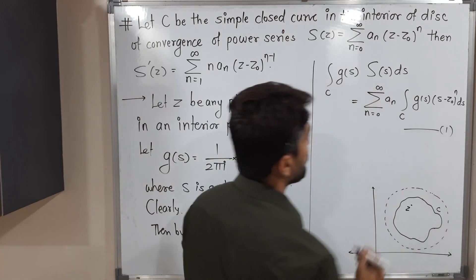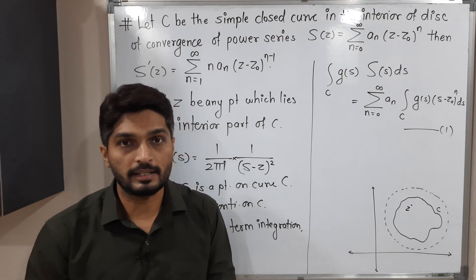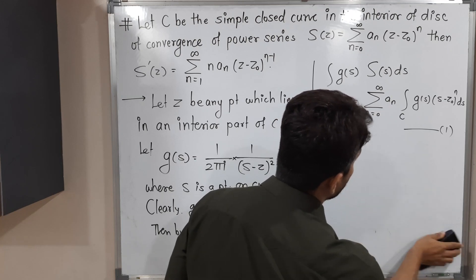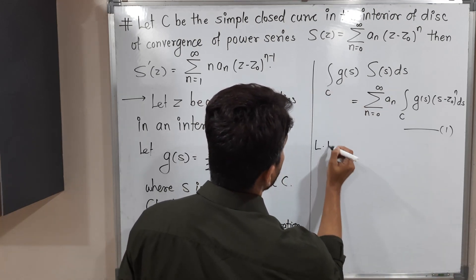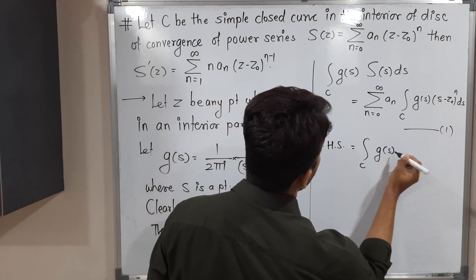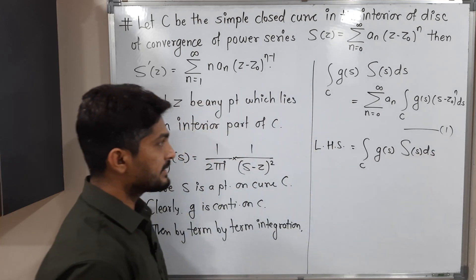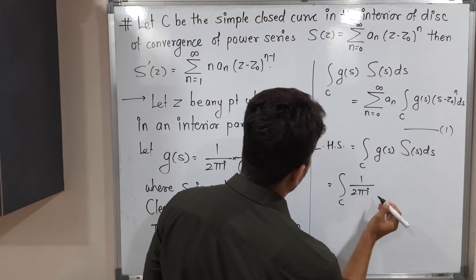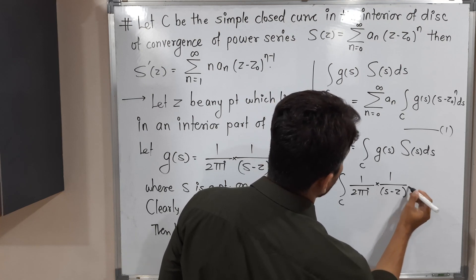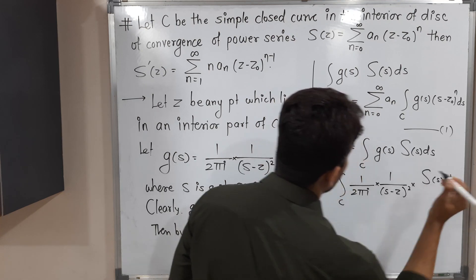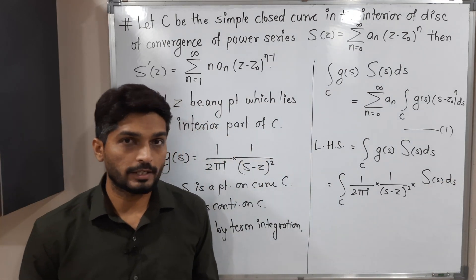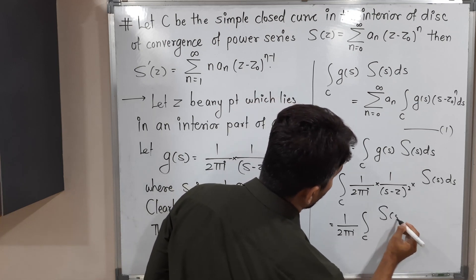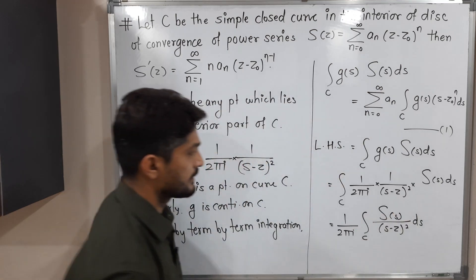Equation one has a left hand side and a right hand side; we calculate both. For the left hand side: the integral over C of g(s)·S(s) ds becomes, after substituting the value of g(s), equal to 1/(2πi) times the integral over C of S(s)/(s − z)² ds. Since 1/(2πi) is a constant, it is taken outside the integral.